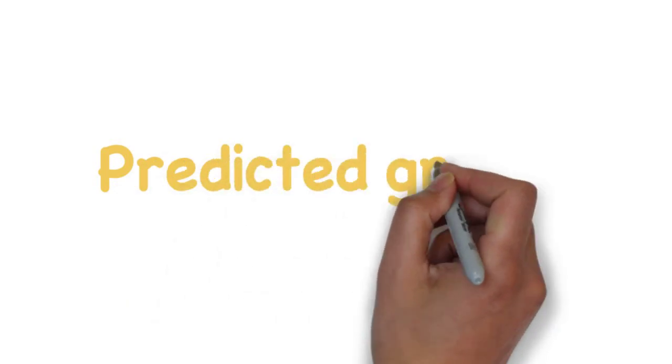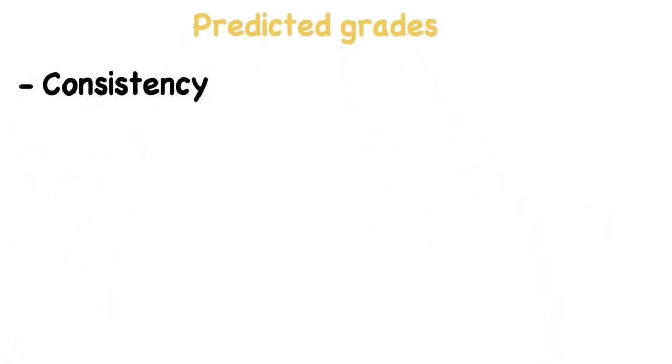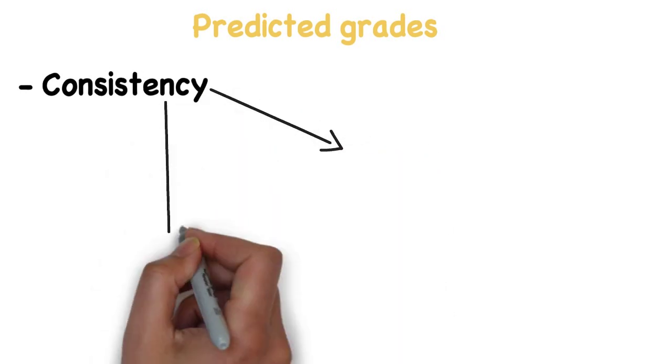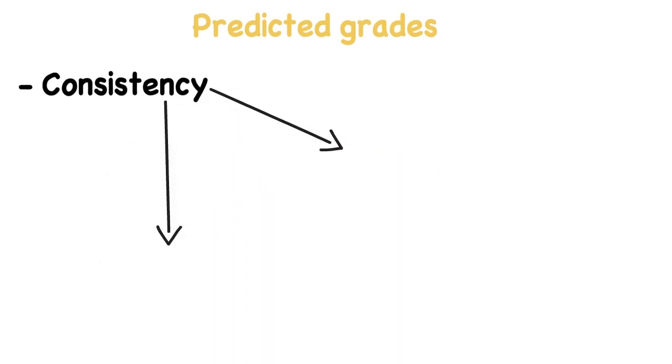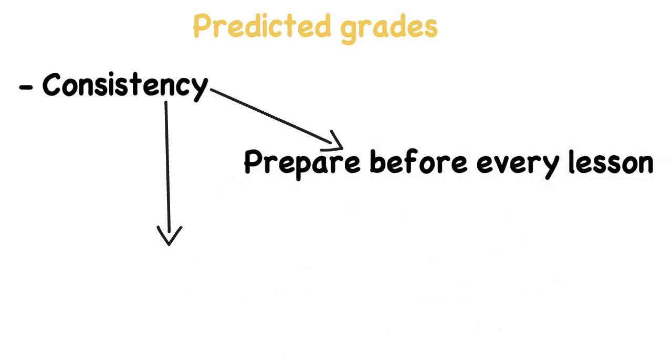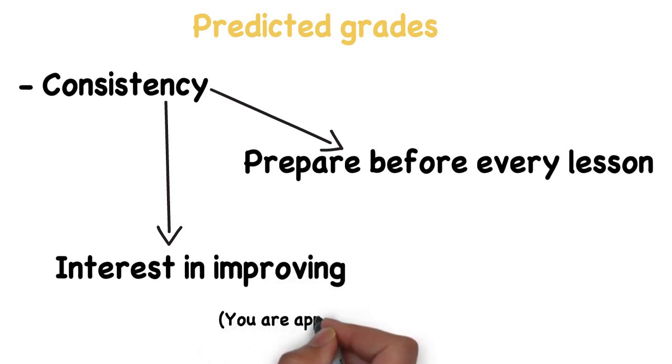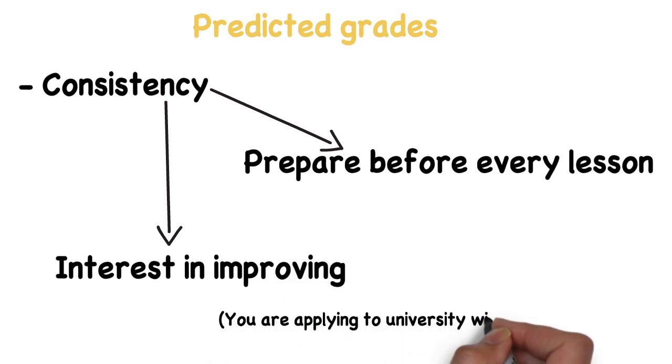When it comes to your predicted grades, it is important to show consistency in your marks throughout the year, so that your teachers can be confident in predicting you a high score. This means that you should prepare before all lessons throughout the year, and show your teachers that you are eager to learn and develop. After all, you are applying to uni with your predicted grades.